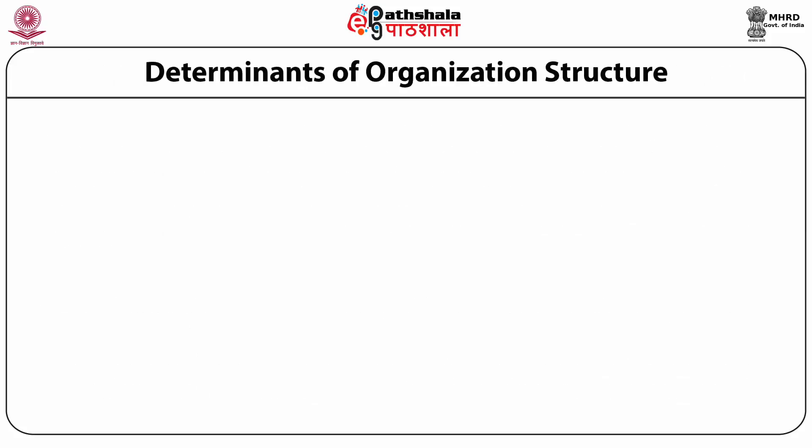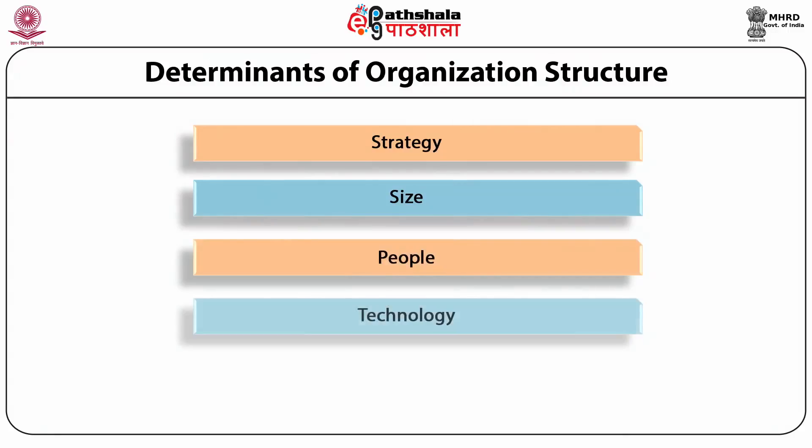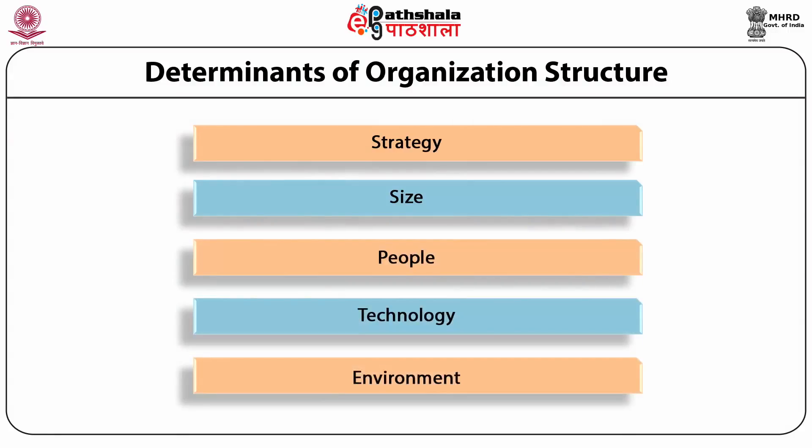What are the determinants of organizational structure? There are basically five determinants: strategy, size, people, technology and environment. Strategy and structure are closely linked — ideally the structure should follow strategy, and structure should be designed for strategy implementation.